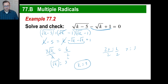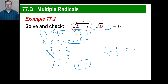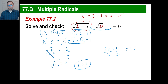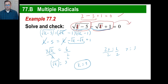Let's check: put 9 in for k. Square root of 9 minus 5 — that's square root of 4, which is 2. Then minus square root of 9, which is 3, plus 1. So 2 minus 3 is negative 1; negative 1 plus 1 equals 0. It works. The key is to get the radical chunk on the other side, square both sides carefully, and then square again when needed.